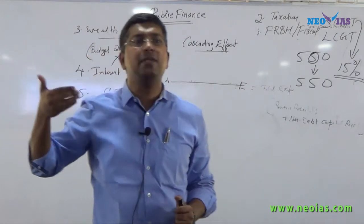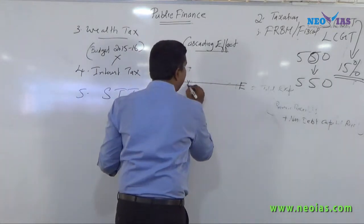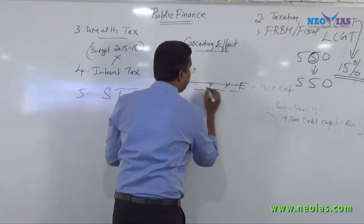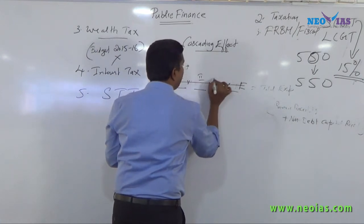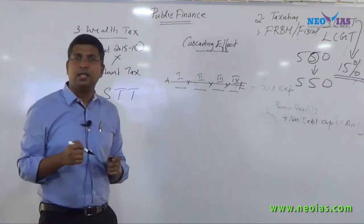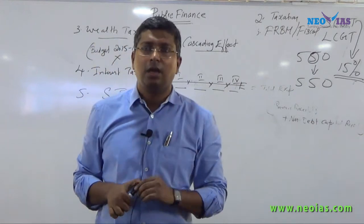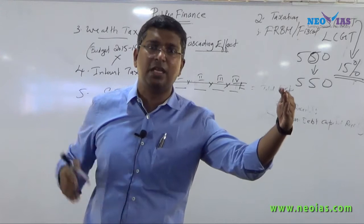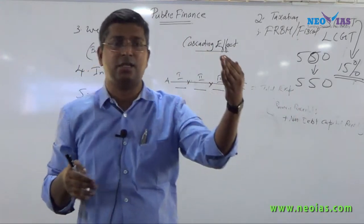A lot of processing happens at various stages — packing and different stages. The product goes through stage 1, stage 2, stage 3, and stage 4. It can be any product. Once it reaches the final stage, it passes through different stages, one after another. Value addition is happening at each stage.